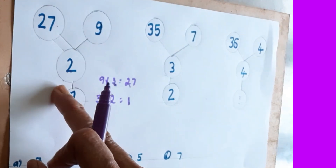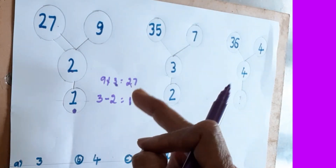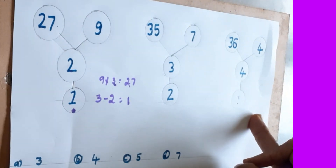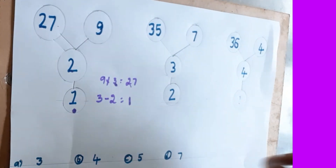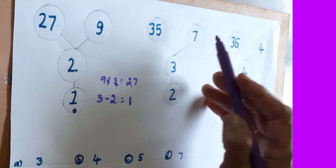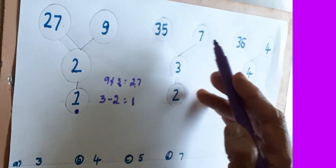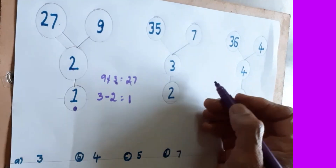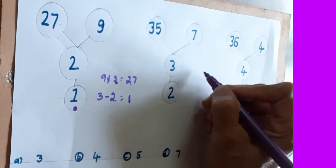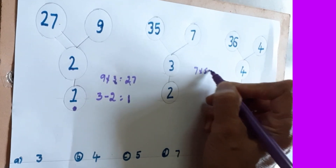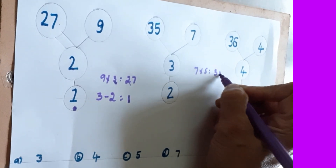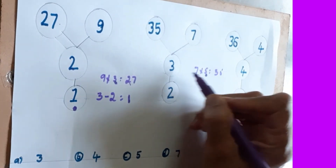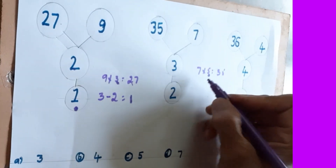First see one thing — the same logic is continuing here also. For the third one, see here 7 is there. How many times will 7 go into 35? Seven fives are 35. I told you: whatever number you are multiplying with, from that you have to subtract this.